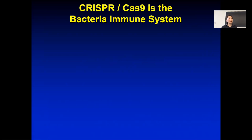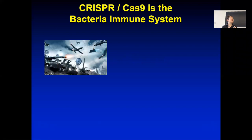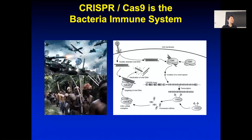CRISPR-Cas9 is the bacterial immune system. The human immune system is very interesting—it's like the US defense system with the Navy, Army, Air Force, B cells, T cells, all these different things. But bacteria is a single-cell system. How can it have an immune system? Bacteria does have an immune system, even though it's very primitive.